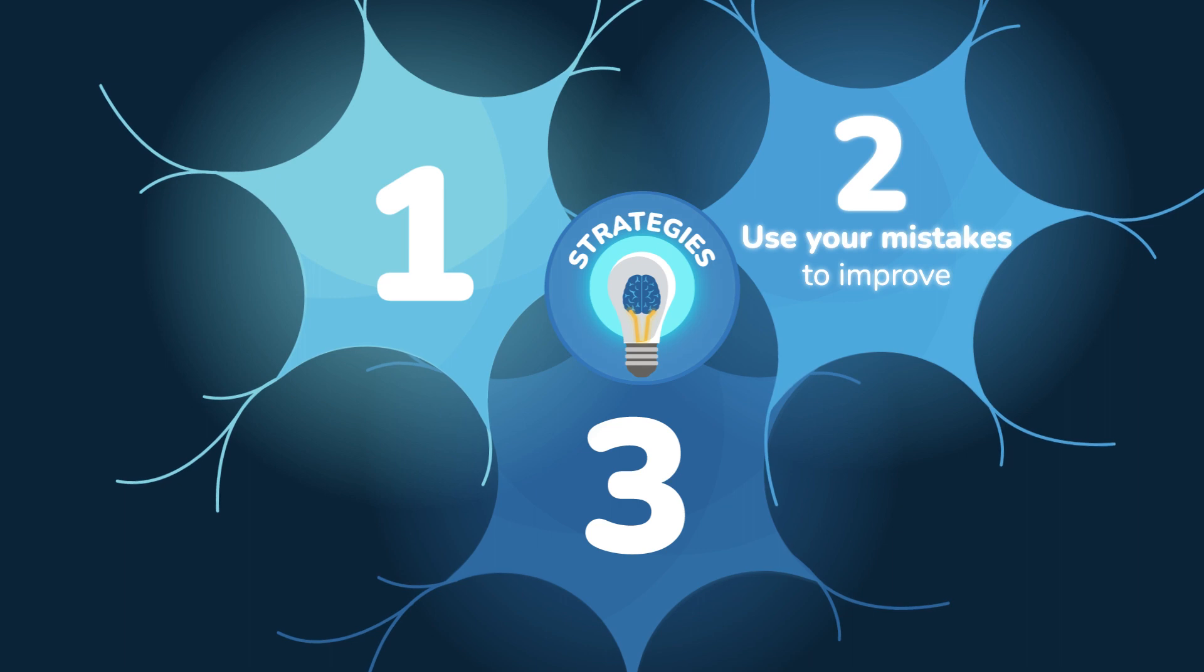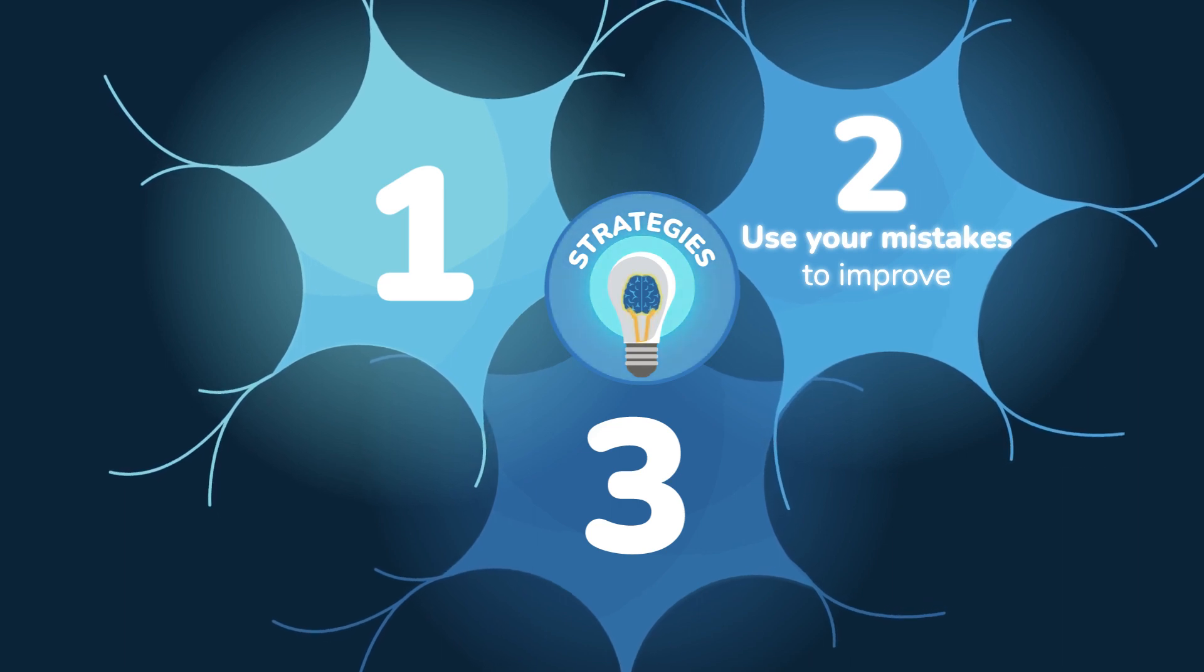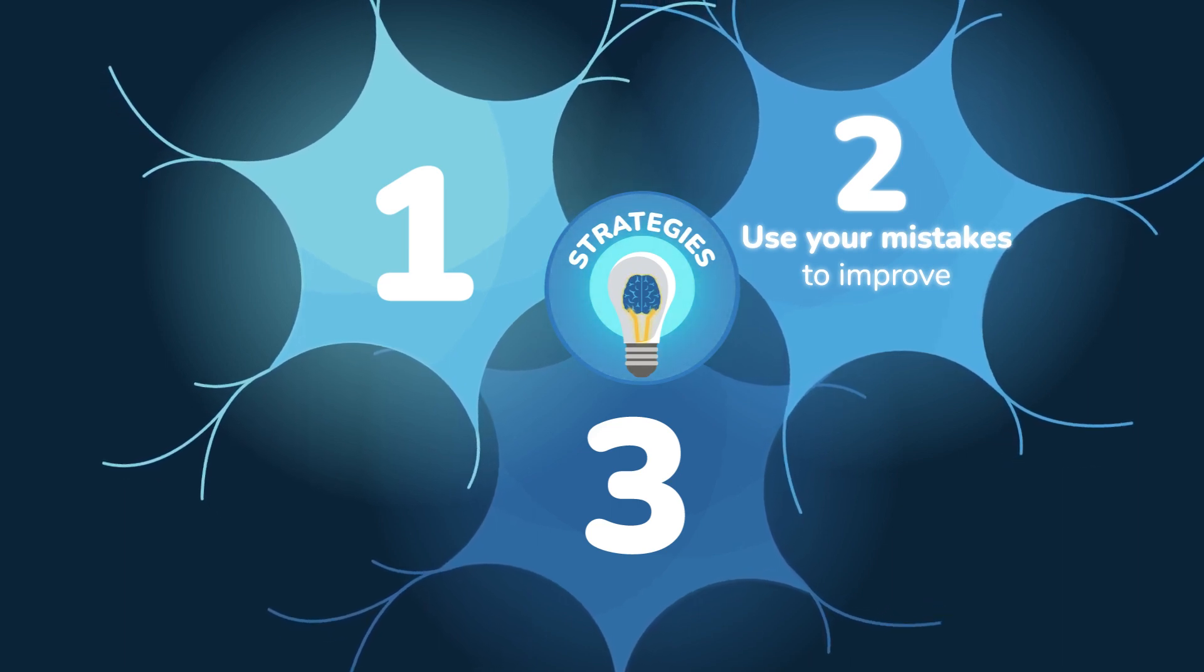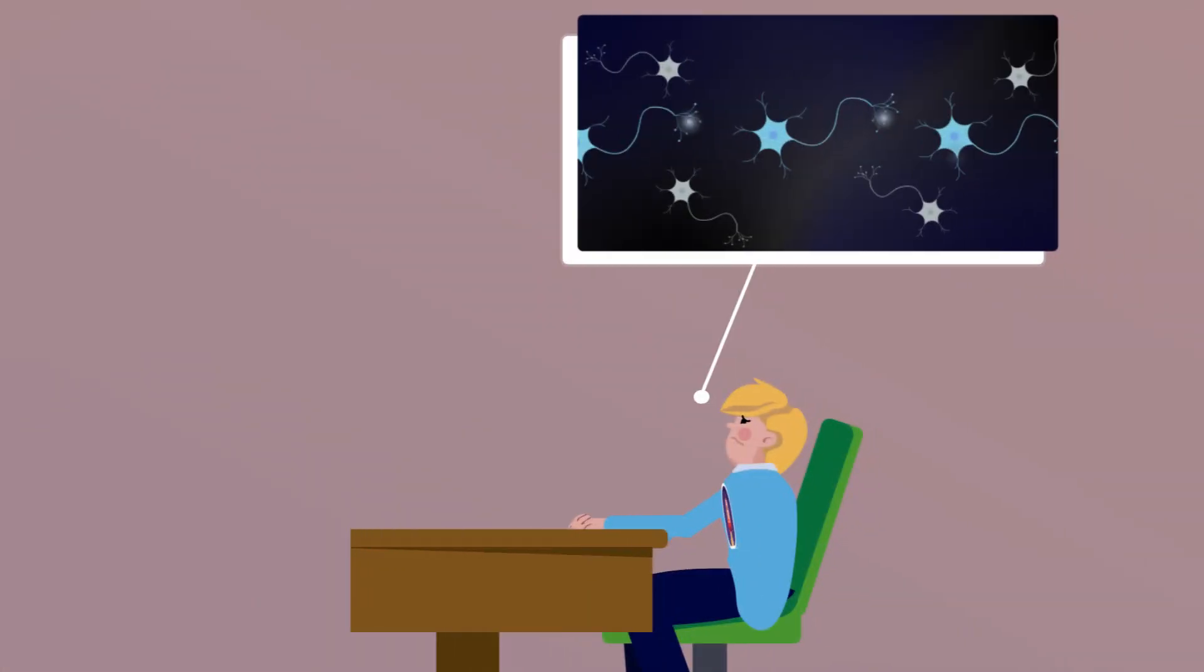The second strategy to help your brain learn is to use your mistakes or difficulties to improve yourself. Sometimes you make a mistake by choosing the wrong trail in your brain. This is perfectly normal. The important thing is that your mistakes give you clues about what you need to work on to improve. When you make a mistake, you may get discouraged and give up. But if you do, your brain won't change in order to learn.